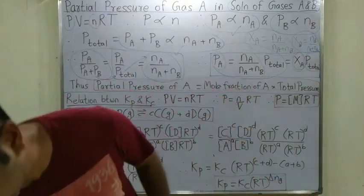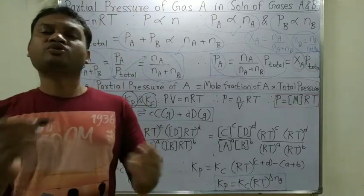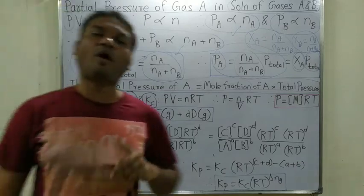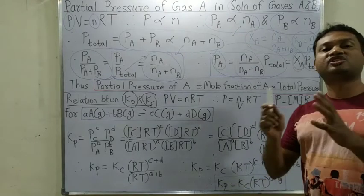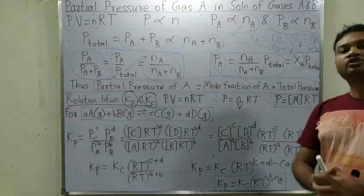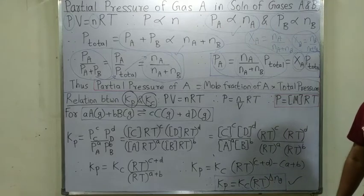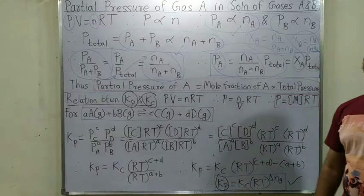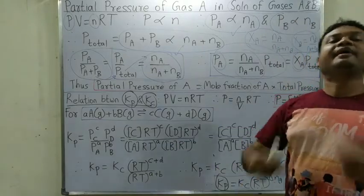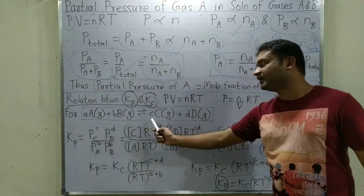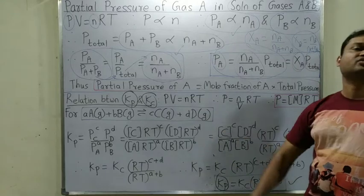After this we will see the relation between Kp and Kc. We have already seen this relation: Kp = Kc × (RT)^Δng, where Δng is moles of gaseous products minus moles of gaseous reactants. Let us derive this. We start from the definition of Kp. Consider a general reaction in the gaseous phase: aA + bB giving cC + dD, all in the gaseous phase.